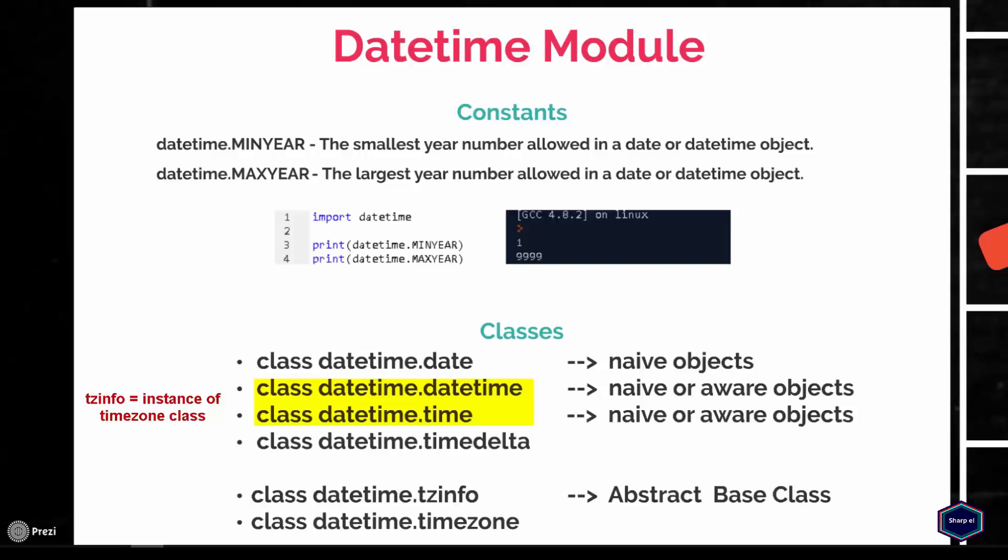The Python community also provides some external modules, like the pytz module, which offers the simplest way to create an aware time or datetime object. The pytz module provides the Olsen timezone database, which is the full database of every timezone definition you might need, and it is even recommended in Python documentation over the timezone class.